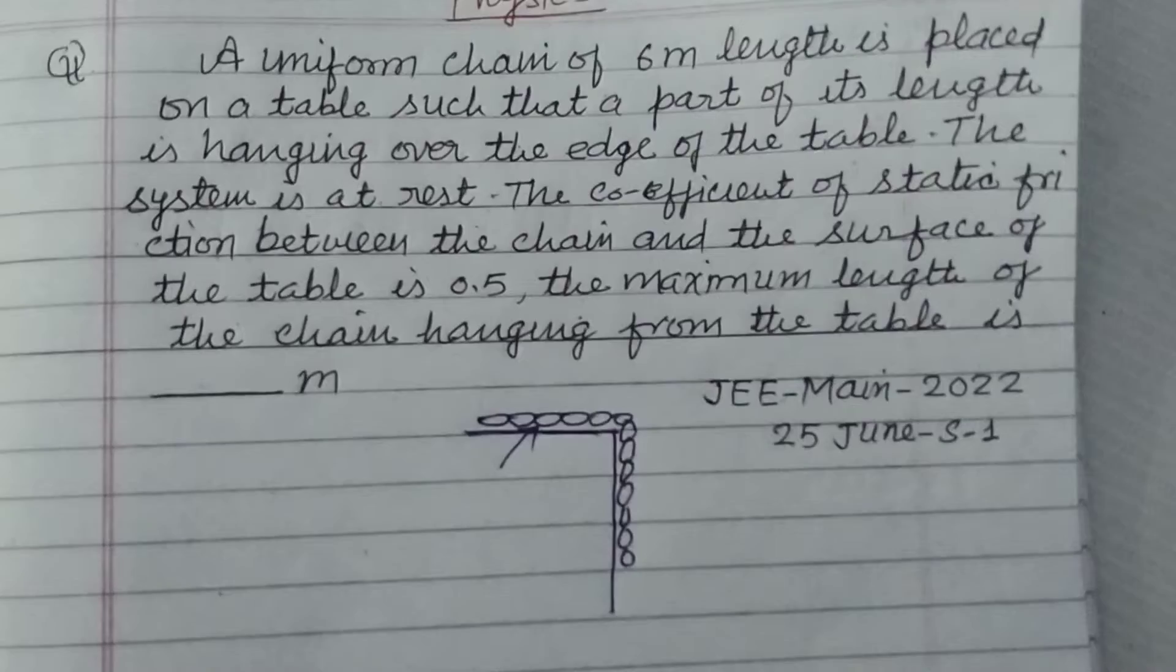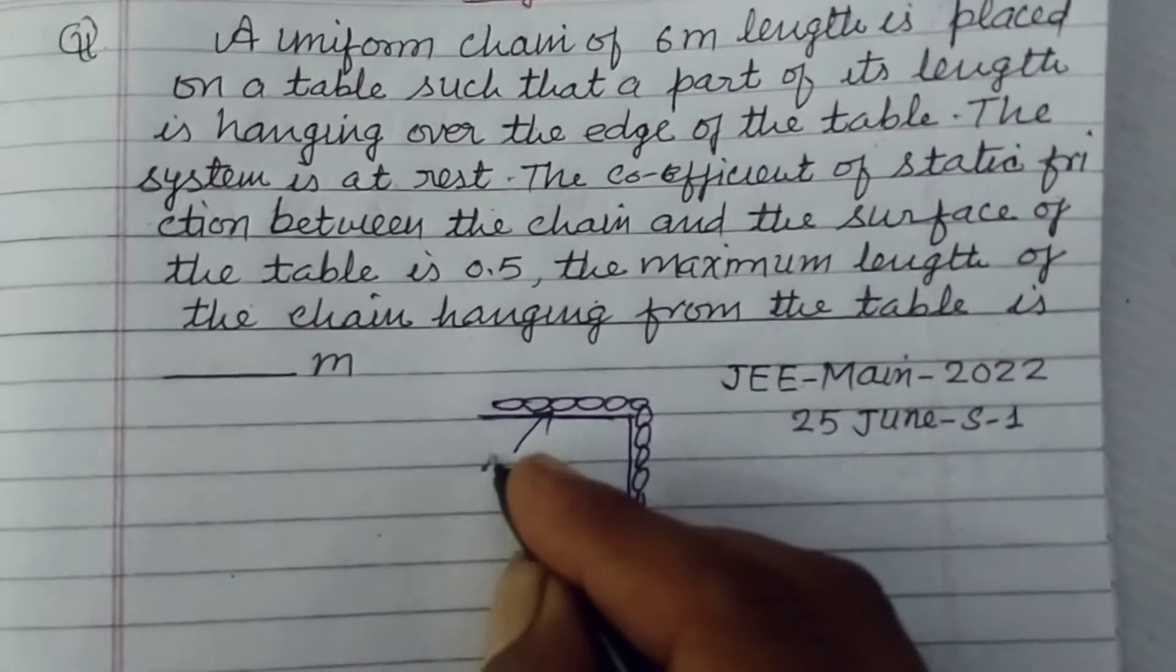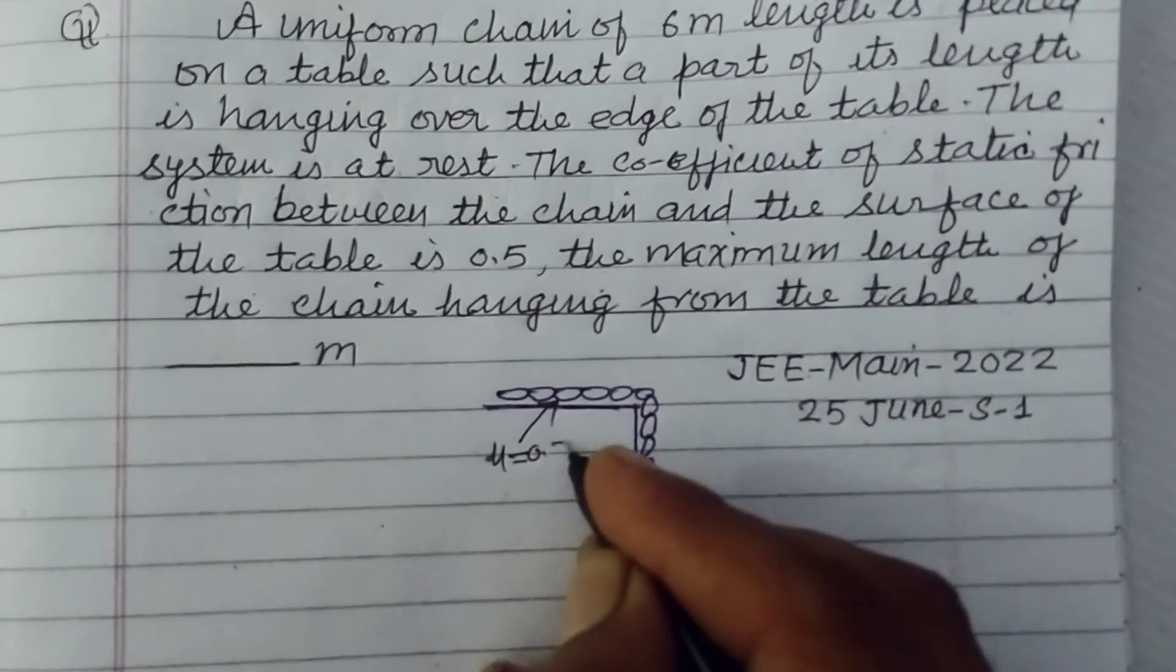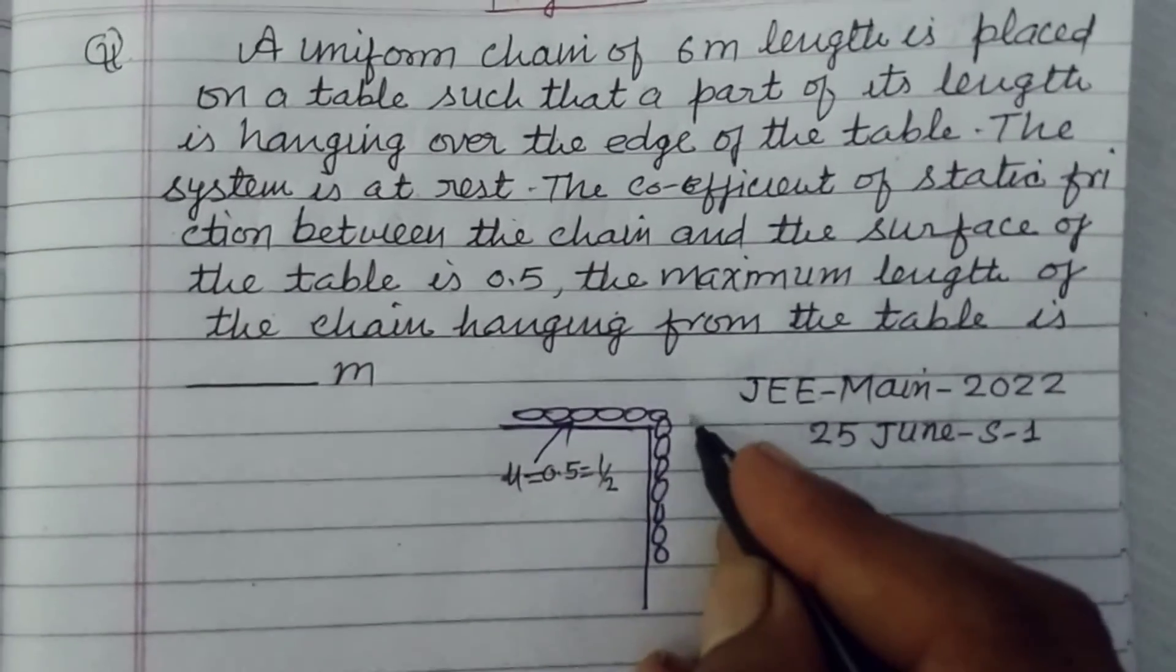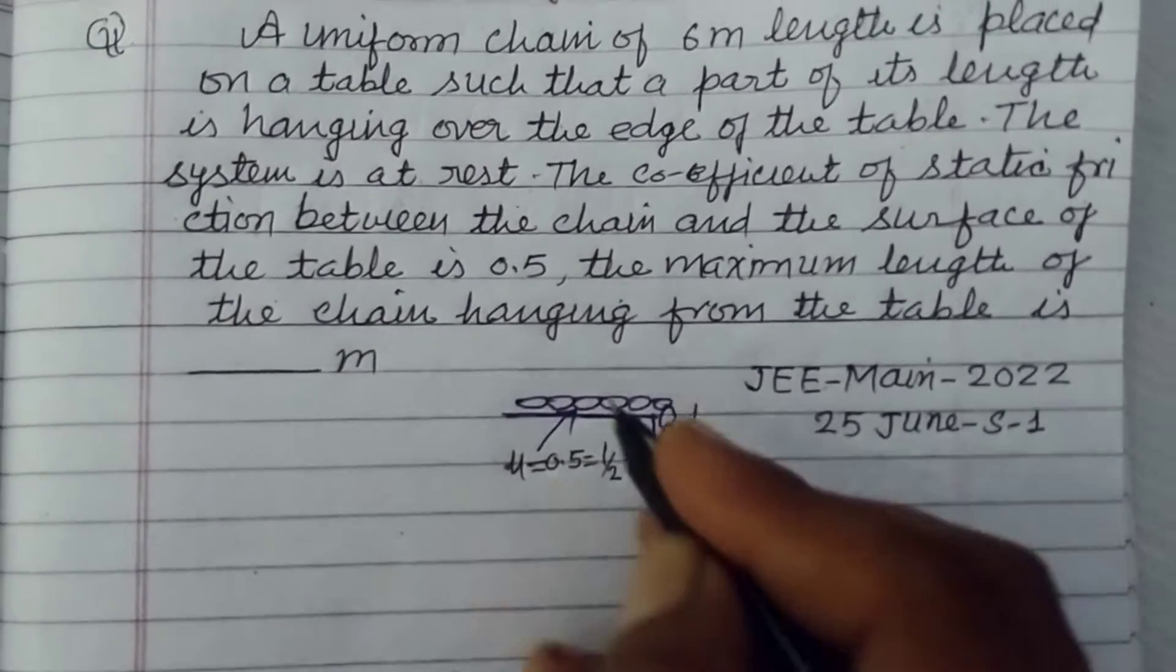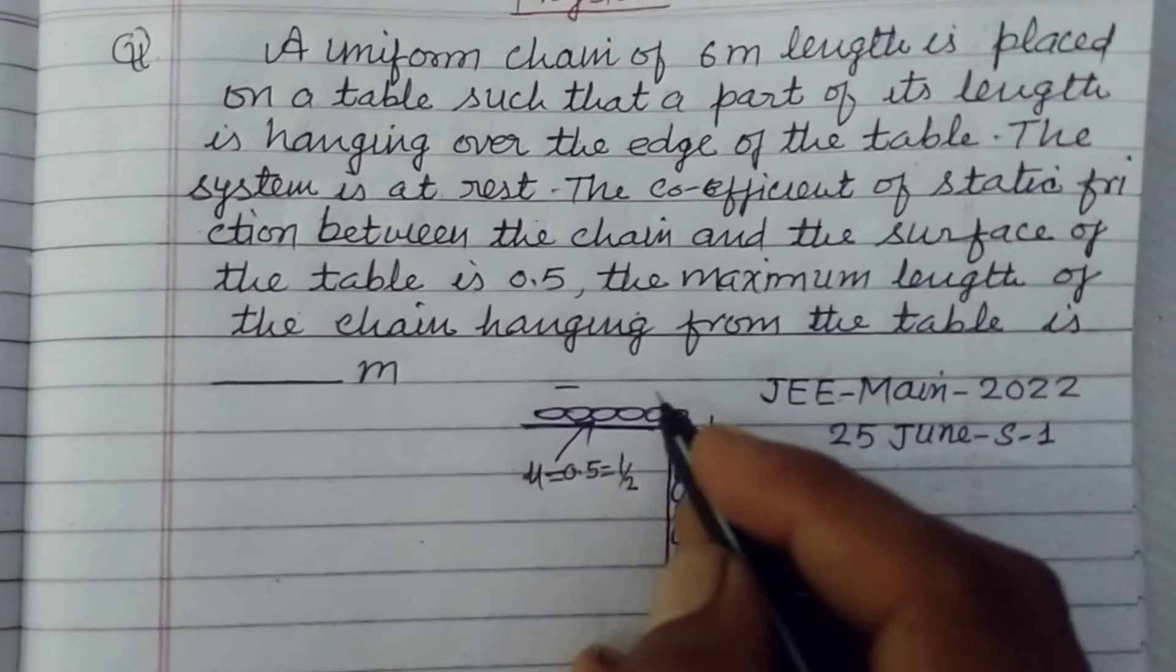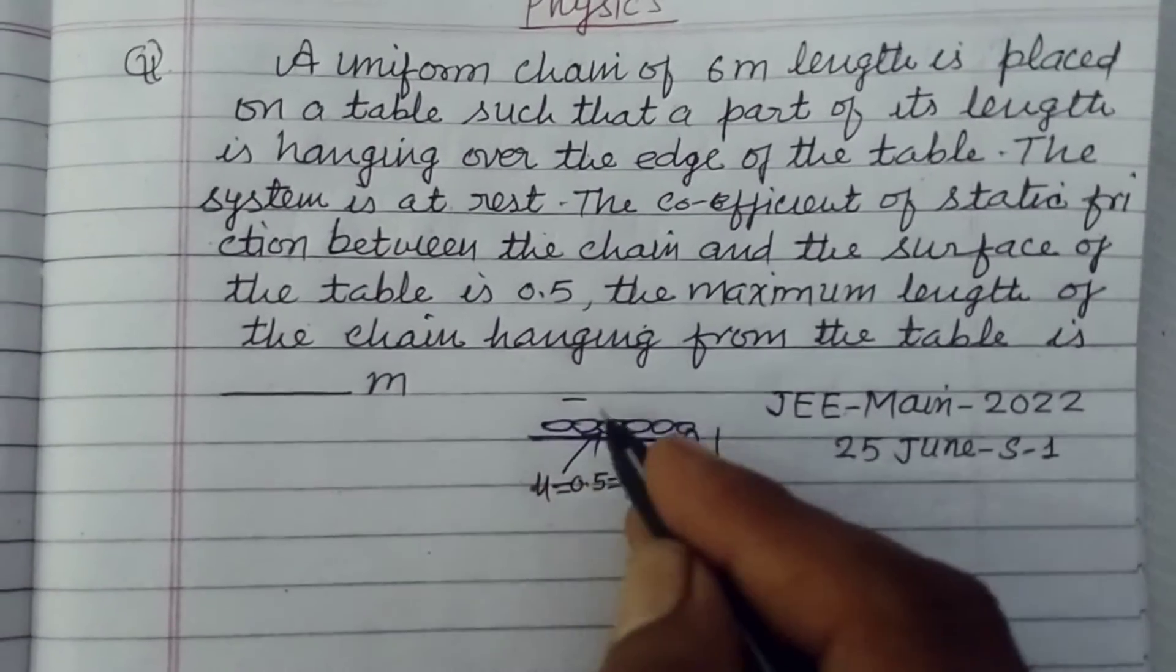The coefficient of static friction between the chain and the surface of the table is 0.5. Here, coefficient of friction is given to us mu which is 0.5 or we write 1 by 2, and this is the length which is hanging here, and this is the length which is over the table.